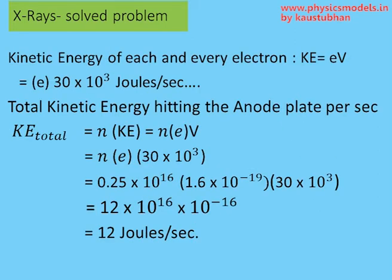Now we can calculate the total kinetic energy that's hitting the anode. The kinetic energy of any given electron is E into V, where E is the static charge of one electron and V in this particular case is 30 times 10 to the power 3, and the unit of kinetic energy is joules per second.